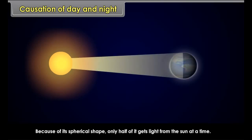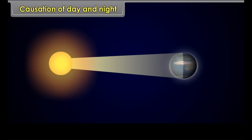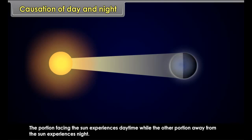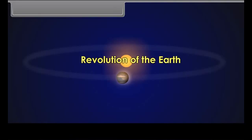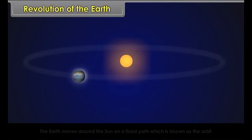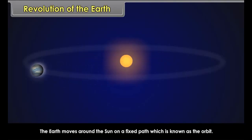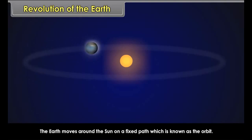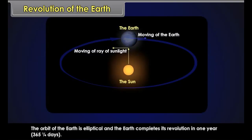Causation of day and night. The days and nights are caused due to the rotation of the earth. The earth receives light from the sun. Because of its spherical shape, only half of it gets light from the sun at a time. The portion facing the sun experiences daytime, while the other portion away from the sun experiences night.